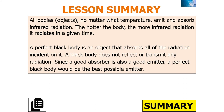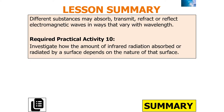What have we learned in today's lesson? All objects, no matter what temperature, emit and absorb infrared radiation. The hotter the body, the more infrared radiation it radiates in a given time. A perfect black body is an object that absorbs all of the radiation incident on it — it does not reflect or transmit any radiation. Since a good absorber is also a good emitter, a perfect black body will be the best possible emitter. Different substances can absorb, transmit, reflect, or refract electromagnetic waves in ways that vary with wavelength.